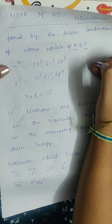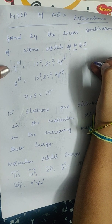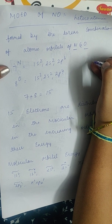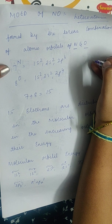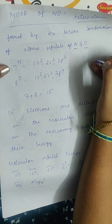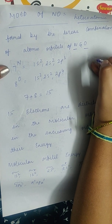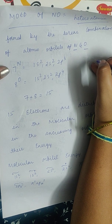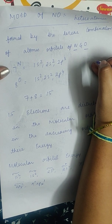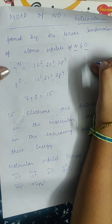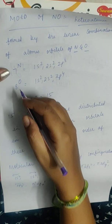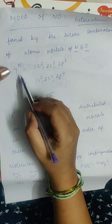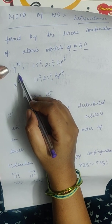So let us see how it is formed and what is the molecular orbital energy configuration, diagram, and calculation of bond order in this video. So if you see the electronic configuration of nitrogen atom,